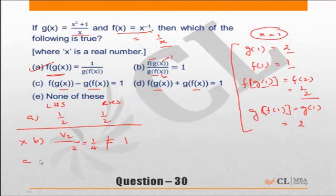Similarly, choice C: f of g(x)—again, f of g(1) is 1 by 2. Choice C: 1 by 2 minus g of f(x), which is 2, which is equal to minus 3 by 2. And the right-hand side for this is equal to 1. These are not equal, so choice C is incorrect.